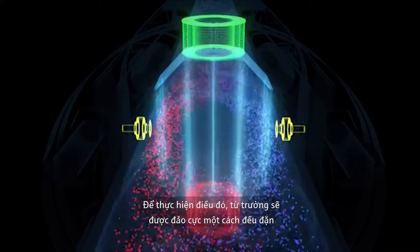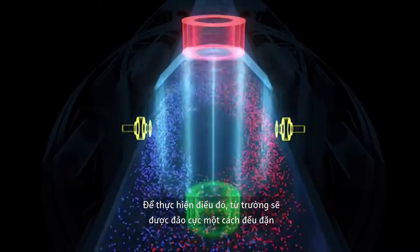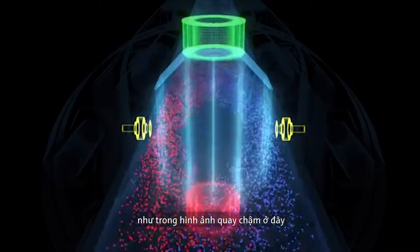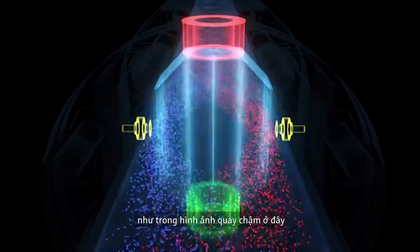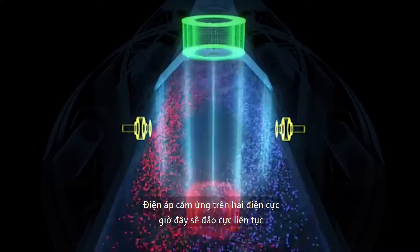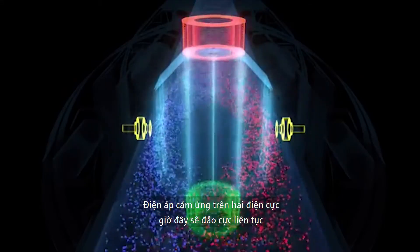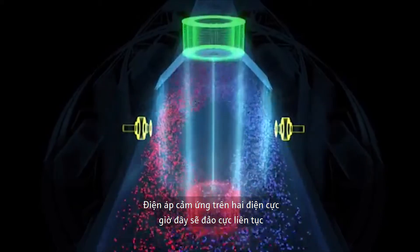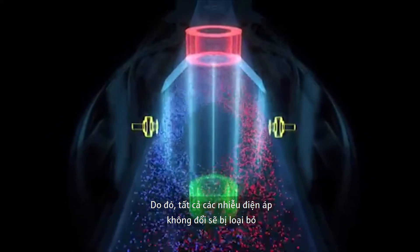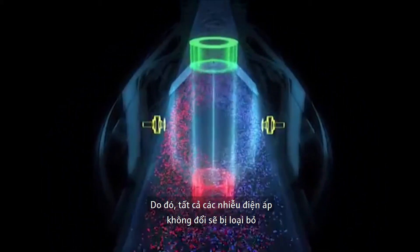To do so, the polarity of the magnetic field is alternately reversed, illustrated here in slow motion. The voltage picked up on the measuring electrodes now constantly changes in polarity. As a result, all constant interference voltages can be eliminated.